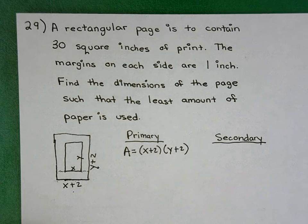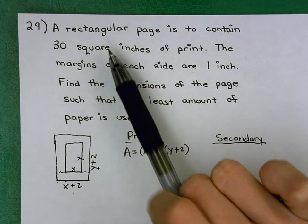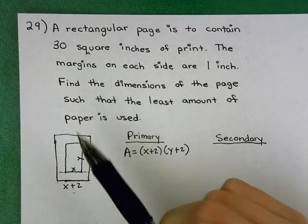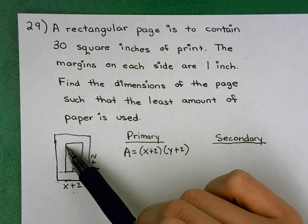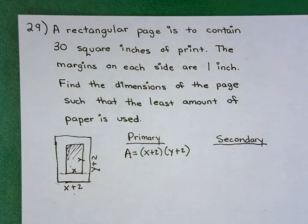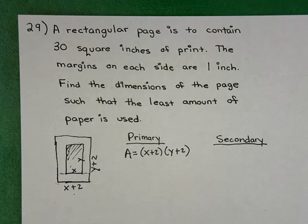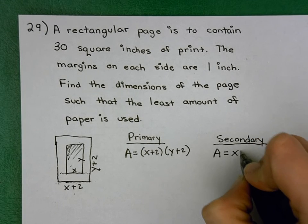The secondary equation is something that's given. In this case, we're given that it contains 30 square inches of print. The print's on the inside here, inside the margins, and this will be 30 square inches if I filled this with print. Well, filling with print, that's area, and the area of that smaller region is XY.